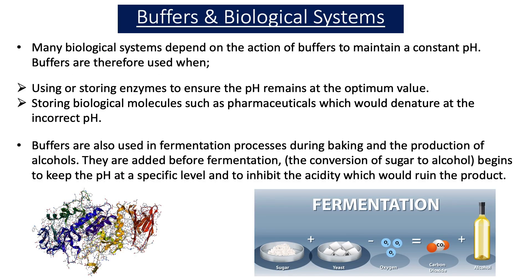Many biological systems depend on the action of buffers to maintain a constant pH. Buffers are therefore used when using or storing enzymes to ensure that the pH remains at the optimum value, and also when storing biological molecules such as pharmaceuticals which would denature at the incorrect pH. To explain why buffers are important in biological systems, we'll use the example of an enzyme.